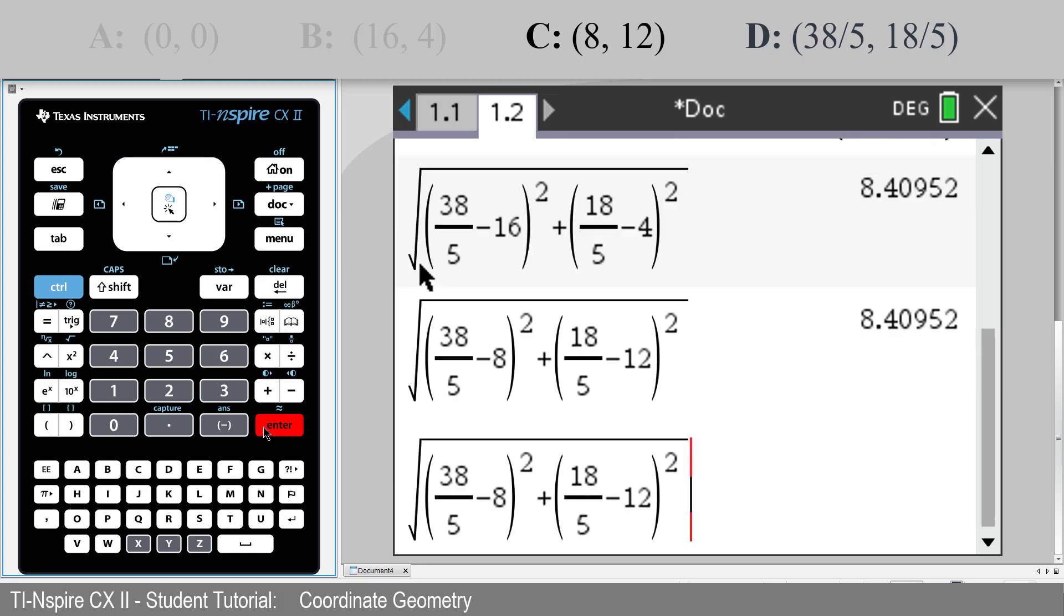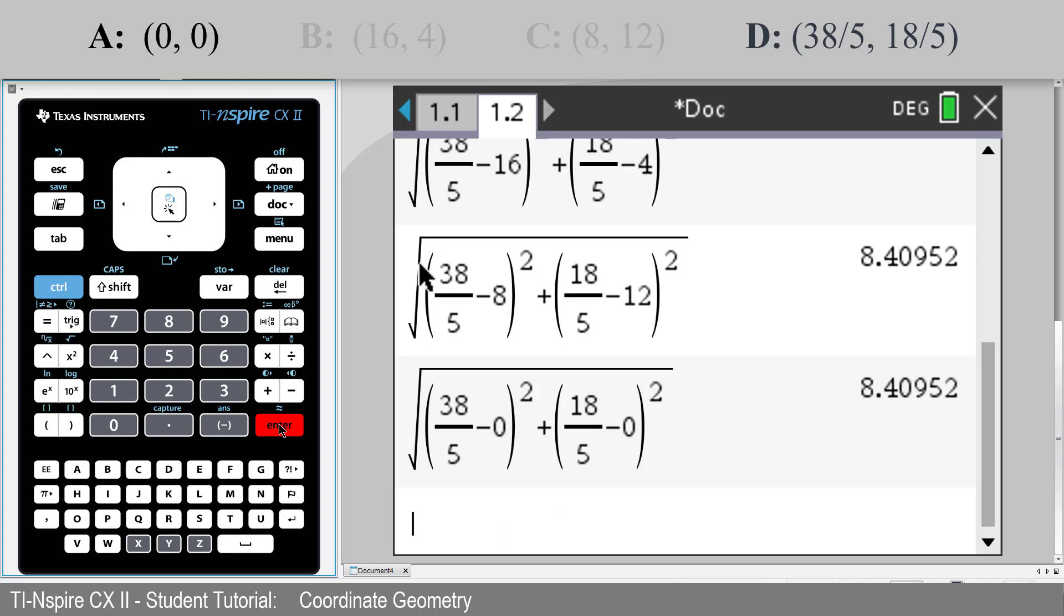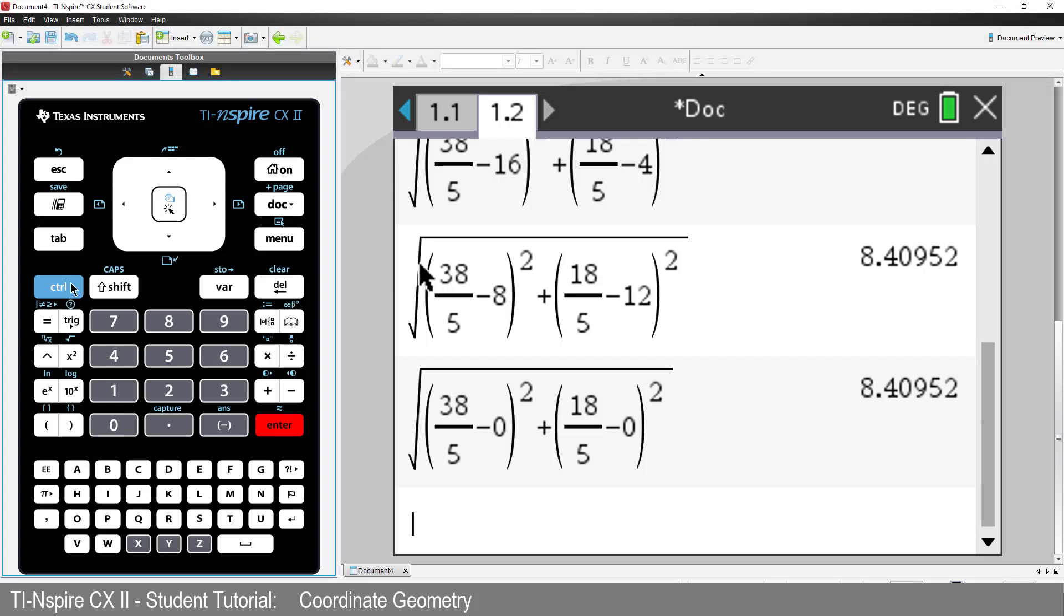And of course, a distance to the origin. Same answer. So the distance from point D to each vertex is the same.